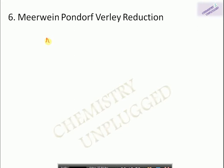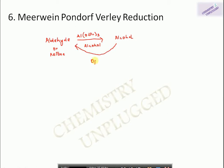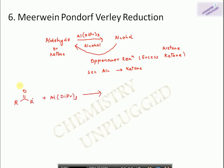The reaction of aldehydes and ketones with aluminium isopropoxide is known as Meerwein-Ponndorf-Verley (MPV) reduction. Isopropanol is used as the solvent and aldehydes and ketones are converted into alcohols. The reverse of this reaction is known as the Oppenauer oxidation, in which alcohols are converted into aldehydes or ketones using aluminium isopropoxide as catalyst and excess ketone — generally acetone — as solvent. Oppenauer oxidation is highly selective for secondary alcohols, converting them to ketones.